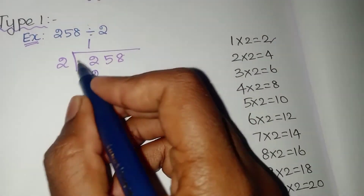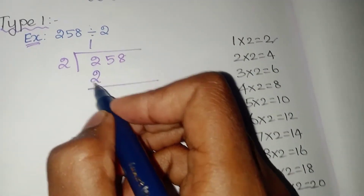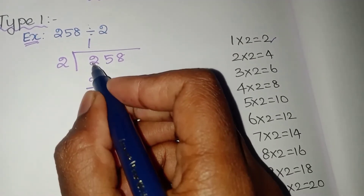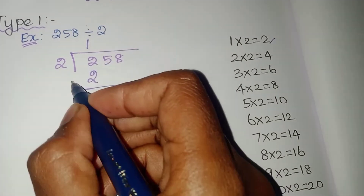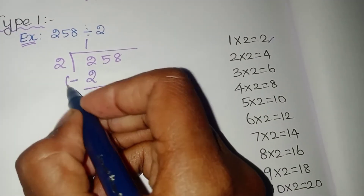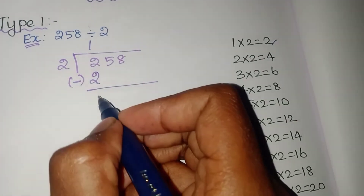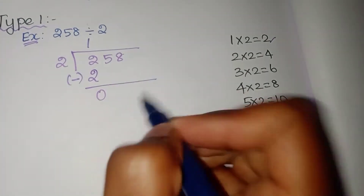Then, the next step — you have to subtract these two numbers. 2 minus 2 equals 0.